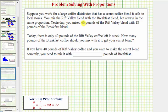Yesterday you mixed 60 pounds of the Rift Valley blend with 18 pounds of the breakfast blend. Today there are only 40 pounds of the Rift Valley coffee left in stock. How many pounds of the breakfast coffee should you mix with it to get your secret blend?